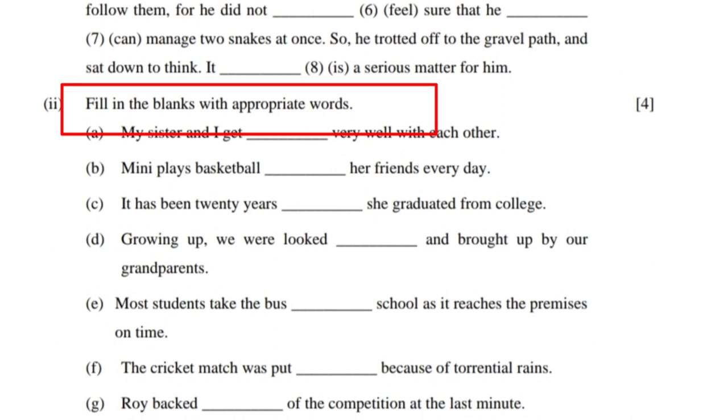The next question is Roman numeral 2, still under question 5, which has preposition questions. You have to fill in the blanks with appropriate words. To deal with this, you have to practice using previous year board papers or your textbook. Go through your Total English book, solve all the exercises, and refer to sample papers as well.